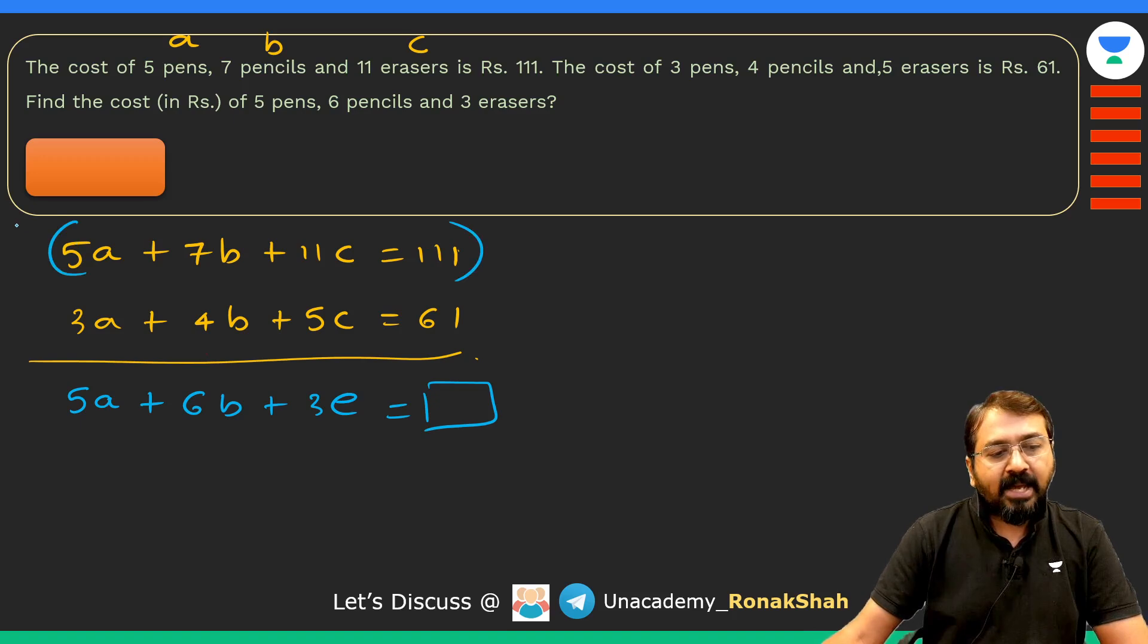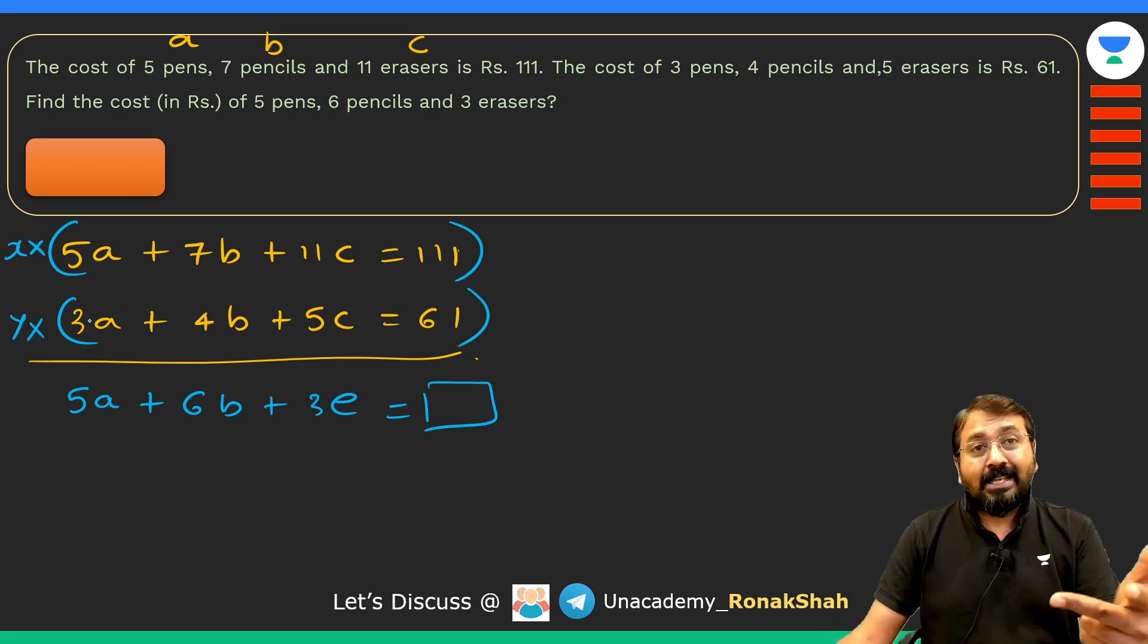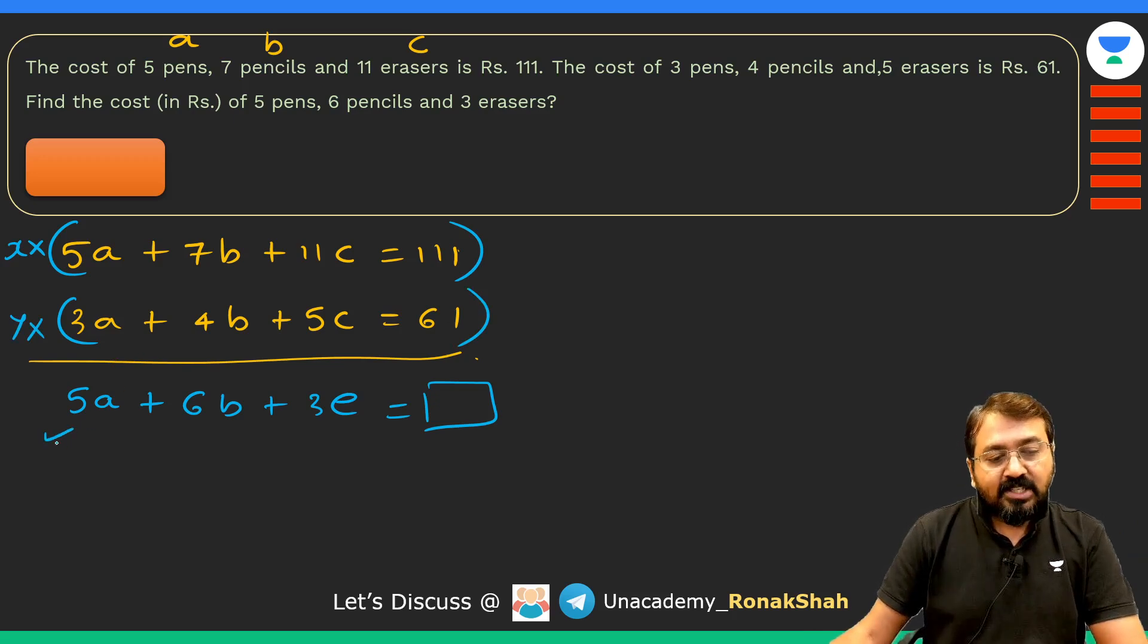Now what we'll do is we'll assume that suppose we need to multiply the first equation by x and the second equation by y. By multiplying them and then adding them, we get this result. So I can say that when I multiply x with 5a and y with 3a, I should get result as 5a. Similarly, when I multiply x with 7b and y with 4b, I should get 6b, and so on.